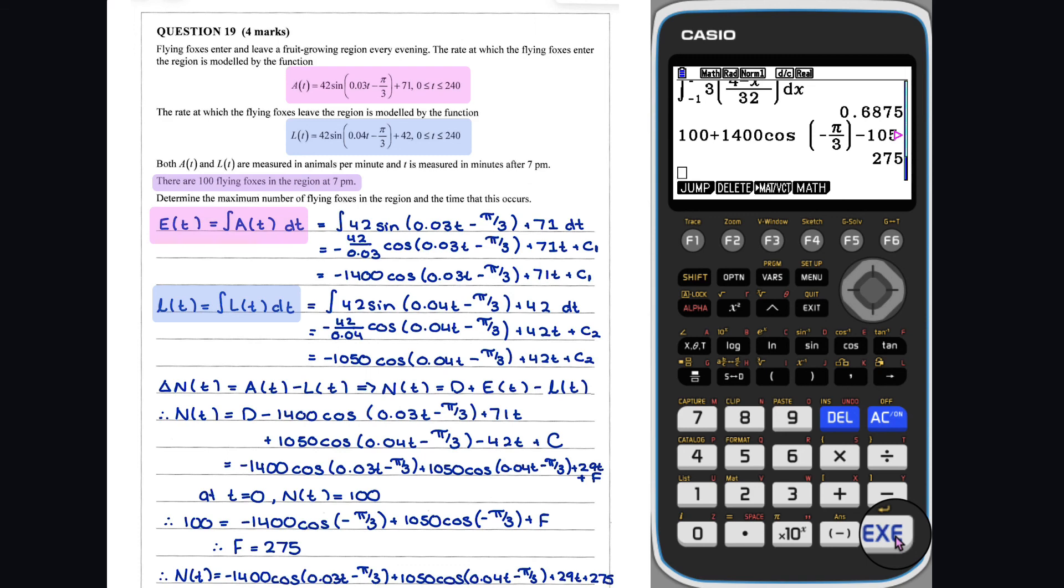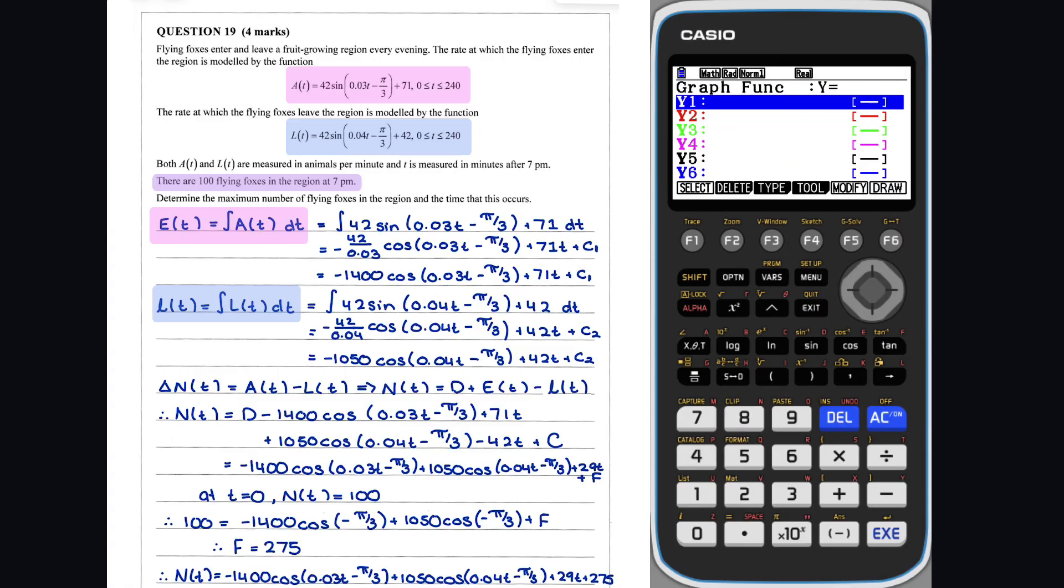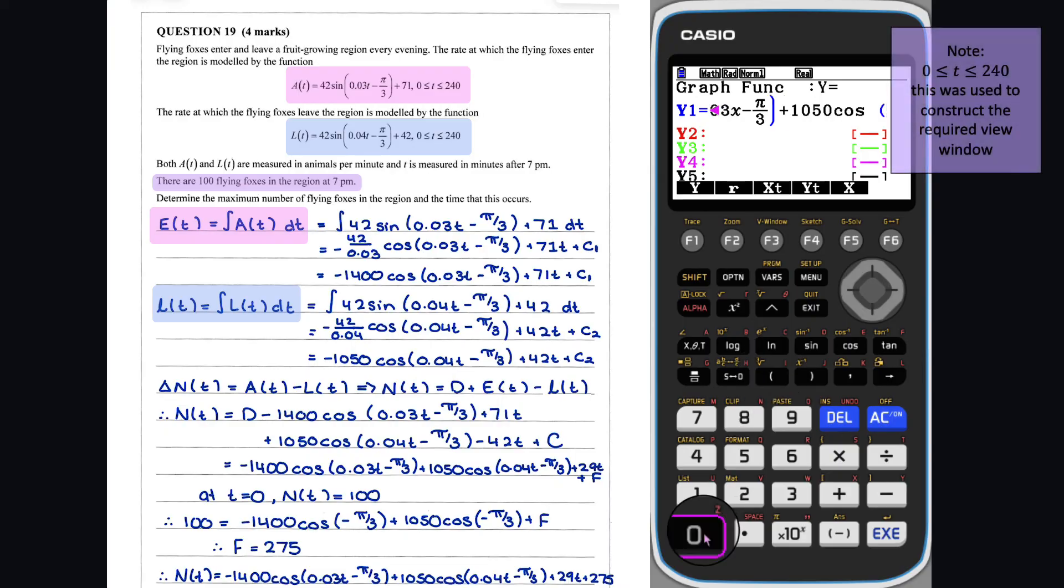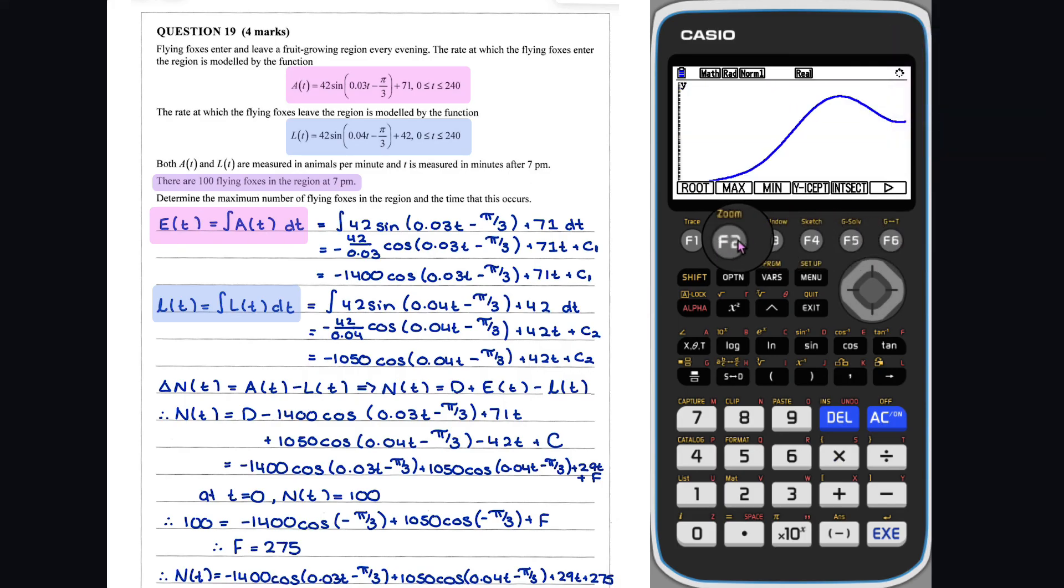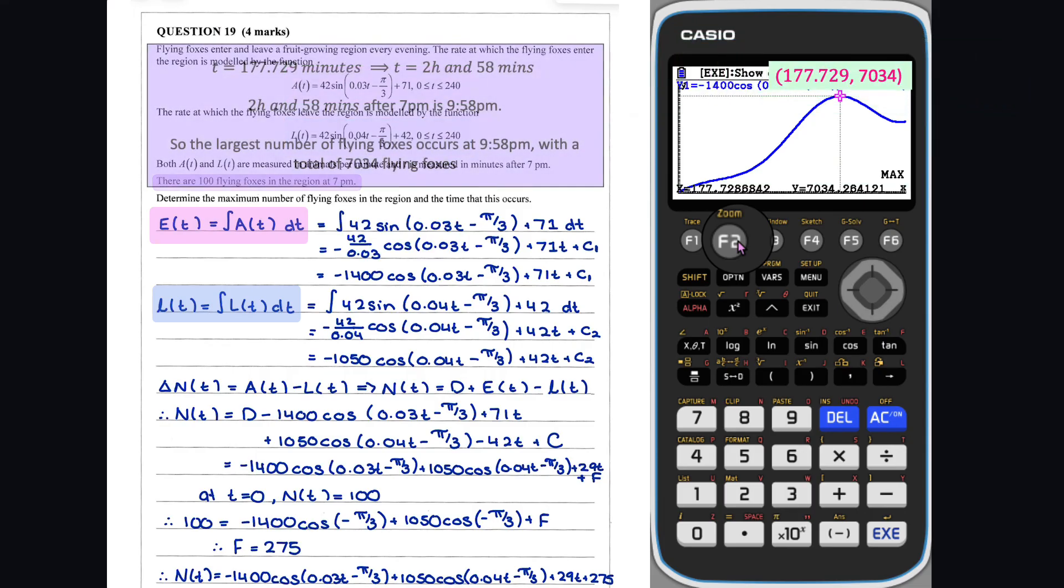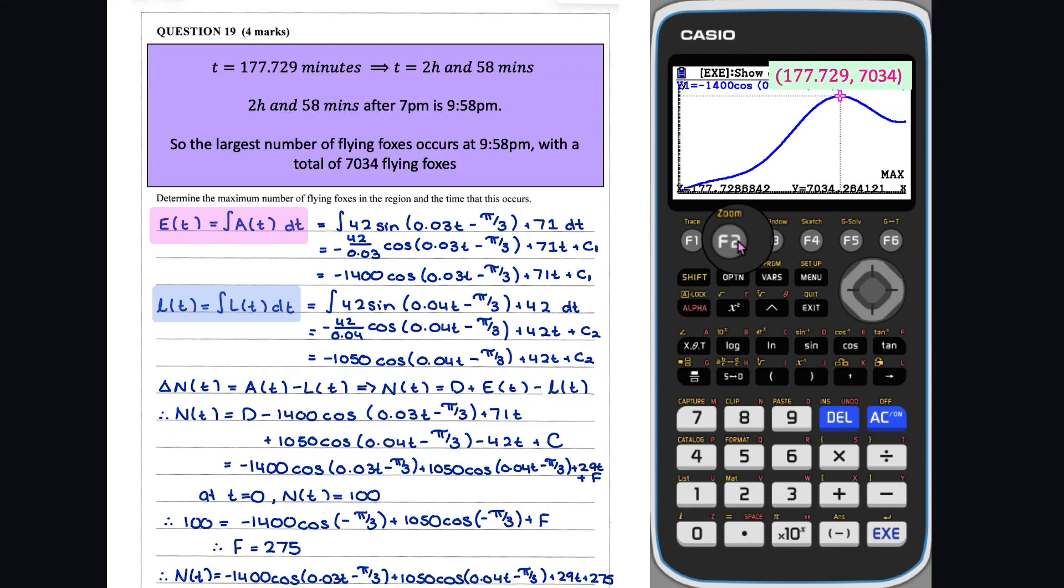This function can be plotted using our calculator and the maximum determined as follows. Thus, the maximum occurs at 2 hours and 58 minutes after 7pm, i.e. 9.58pm, and there are 7,034 flying foxes.